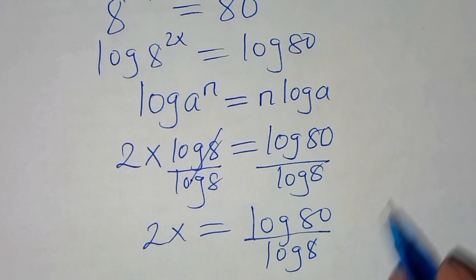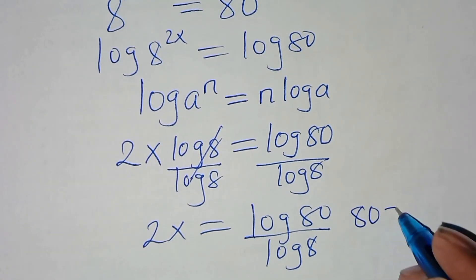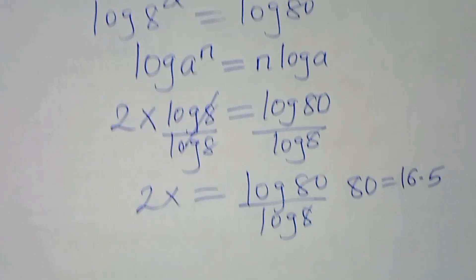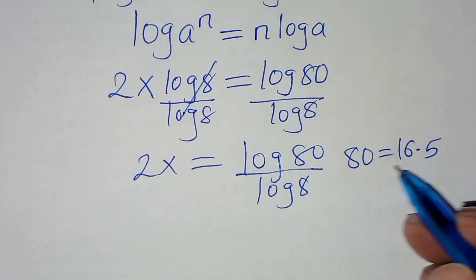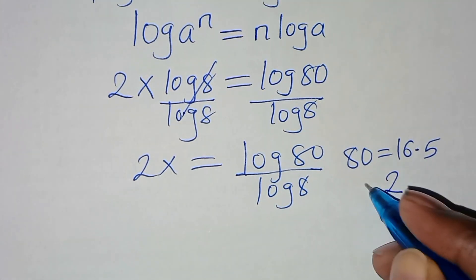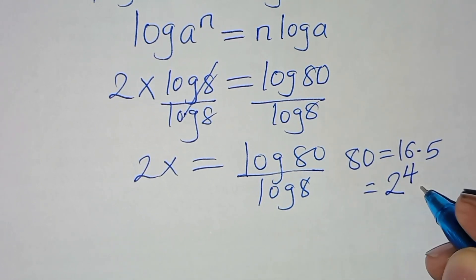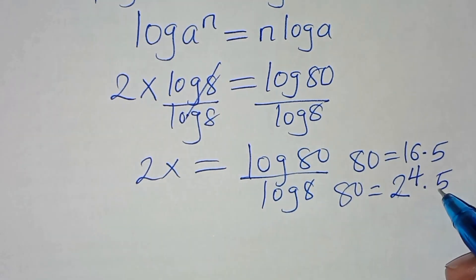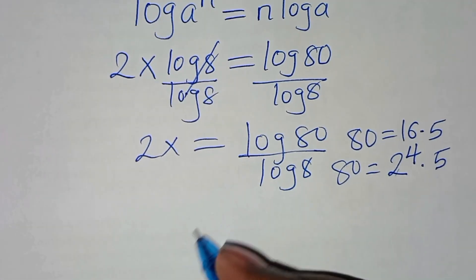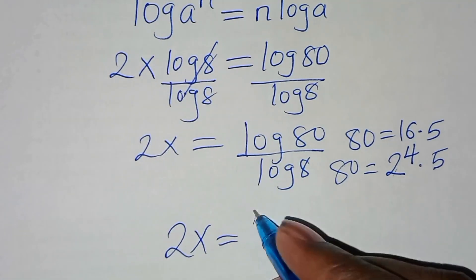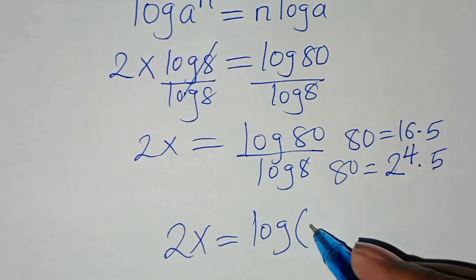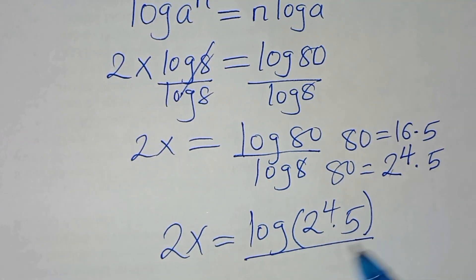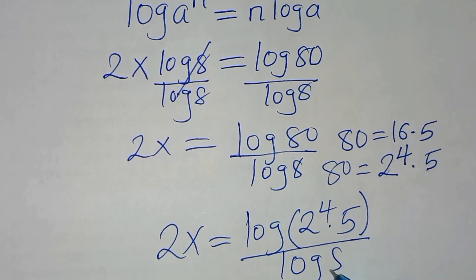We can express 80 as 16 multiplied by 5, and 16 can be expressed as 2 to the power 4, so 80 can be expressed as 2 to the power 4 times 5. So here we'll have 2x equal to ln(2 to the power 4 multiplied by 5) divided by ln(8).